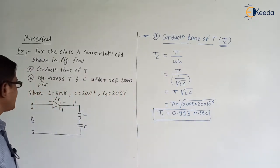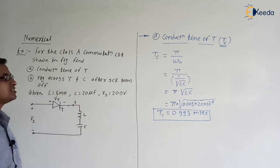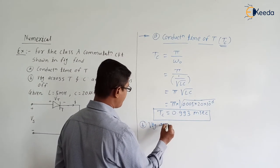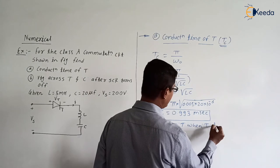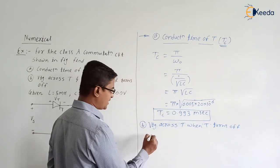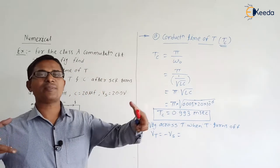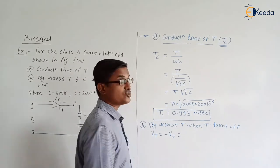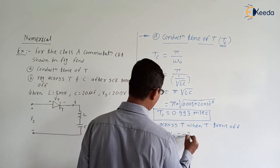In the second part, they have asked the voltage across the thyristor and voltage across the capacitor after the SCR turns off. Voltage across thyristor when thyristor T turns off: Vt = Vs − 2Vs = −Vs. Because the capacitor is charged to 2Vs at turn-off. Since Vs = 200V, the voltage across the thyristor is −200 volt.